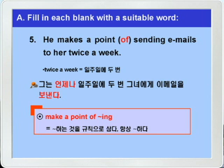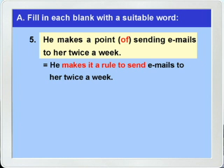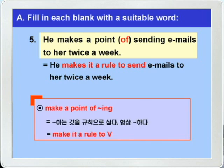정답과 함께 이 문장을 다른 말로 바꿔쓴 문장을 한번 들어보죠. 'He makes a point of sending emails to her twice a week.' 'He makes it a rule to send emails to her twice a week.' 'make it a rule to 부정사'는 무슨 뜻입니까? '뭐뭐를 규칙으로 삼다, 항상 뭐뭐하다' 이런 뜻이었죠. 그래서 'make a point of -ing'와 같은 뜻이 되겠습니다. 함께 외워두시기 바랍니다.